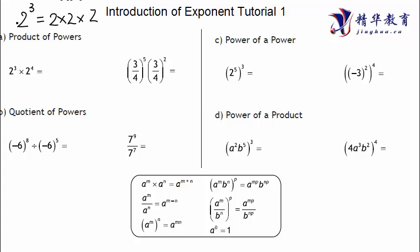In this video, I'm going to talk about how to use the identities and rules of exponents. Remember two things: power of power equals power multiply, and power times power equals power add up. So we have A to the power of M times A to the power of N equal to A to the power of M plus N.